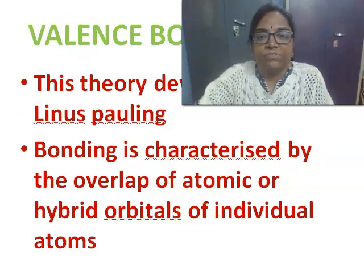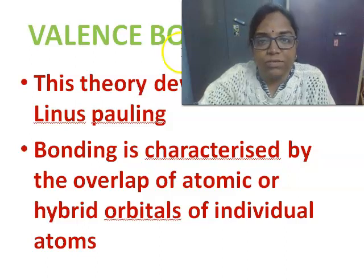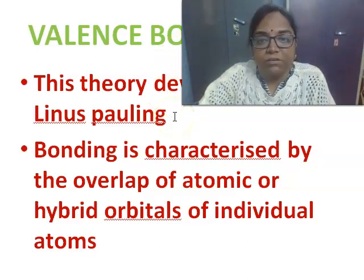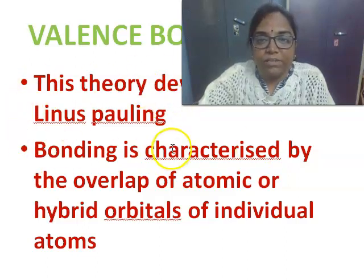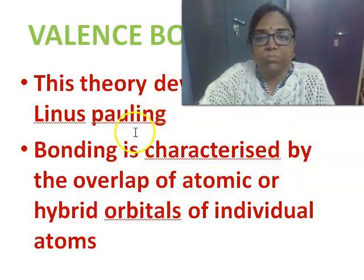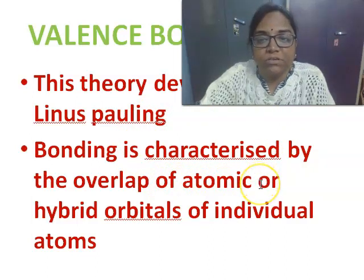First we will move on to the introduction part of valence bond theory. This theory was developed by Linus Pauling, so it is otherwise called Pauling's theory. This valence bond theory mainly talks about the overlapping of the atomic or hybrid orbitals of the individual atoms.